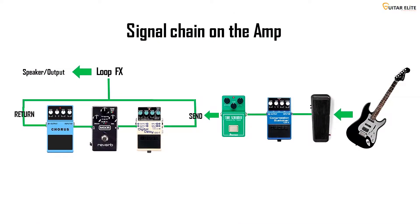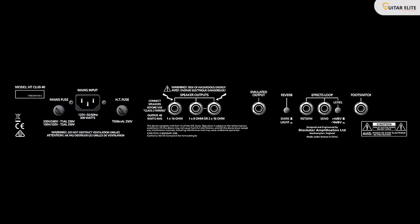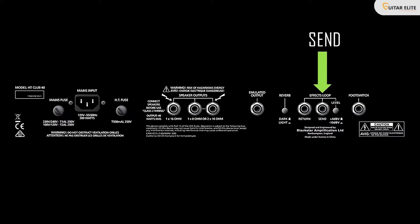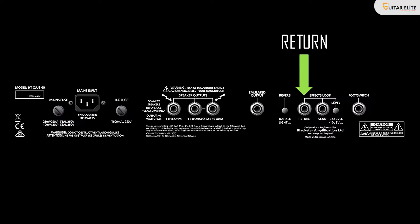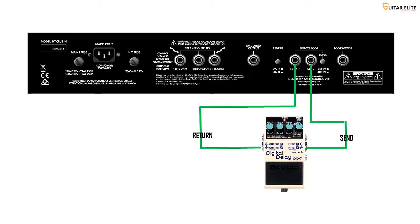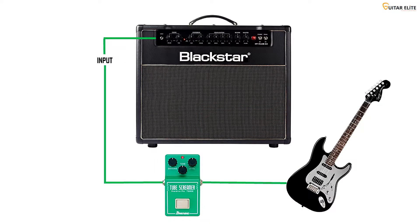This can help us to get a cleaner and more understandable sound from the amp when using these kinds of effects. On the loop effects section we're going to find two jack inputs: one called Send, which is basically an output of the preamp section of the amp, and one called Return, which is the signal that returns to the amp. For this case, I've connected the Send of the loop effects to the input of the Boss DD7, and the output of the DD7 to the Return section. I've also put a Tube Screamer in front of the amp just to get a more crunchy and punchy sound.